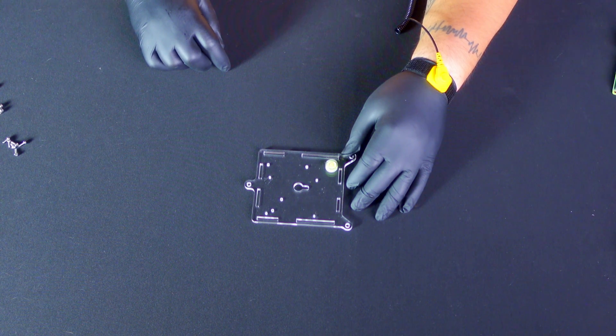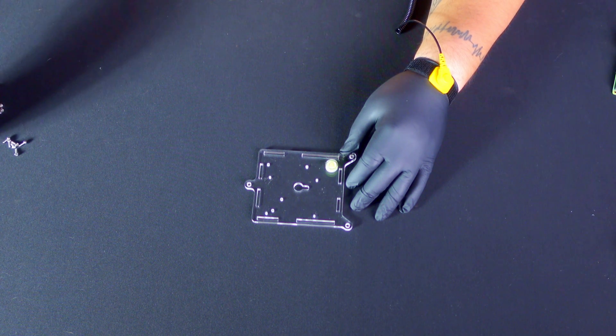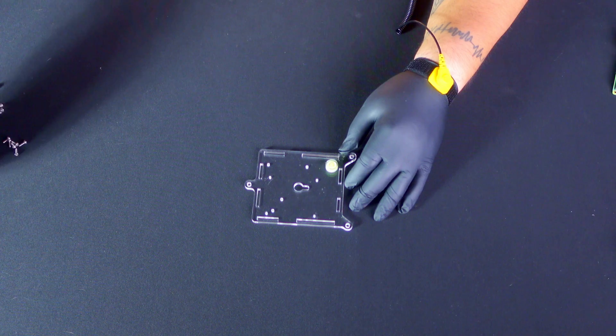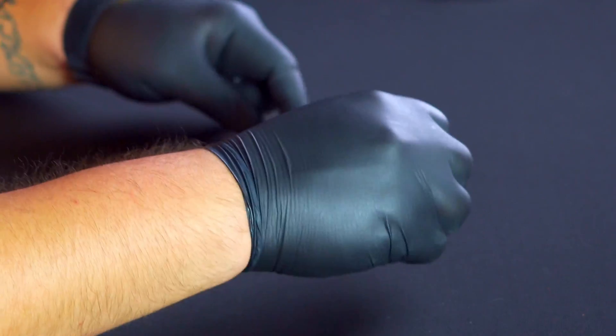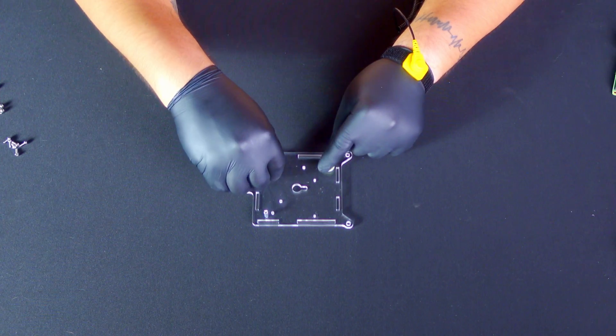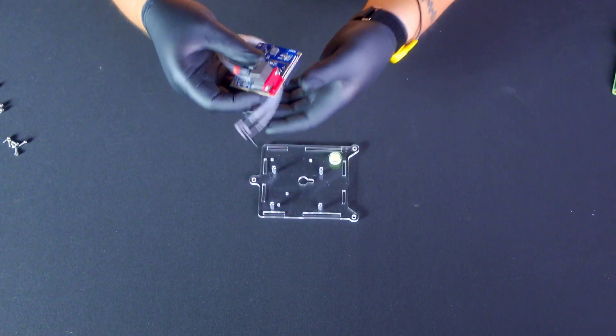Now, with these precautions set, let's begin! First, grab the acrylic base panel with the attached bubble level, then screw in four metal standoffs into the four corresponding holes in the base.